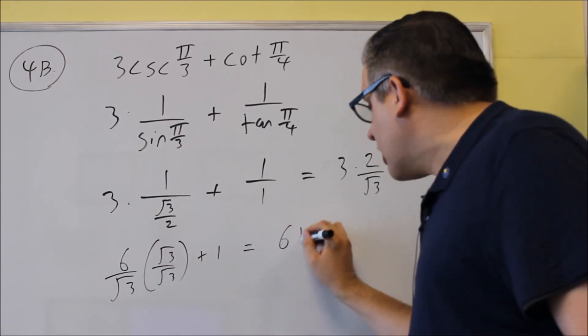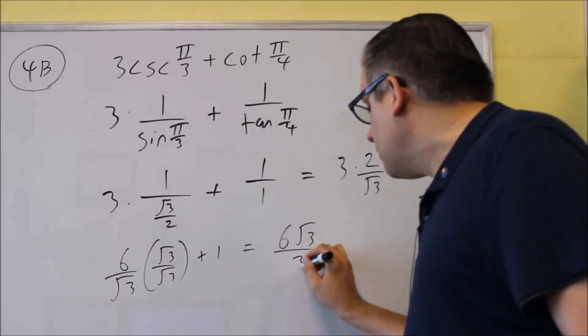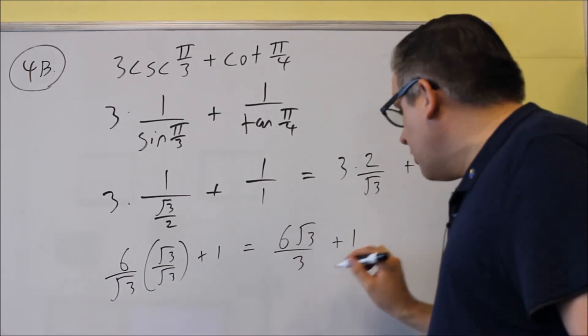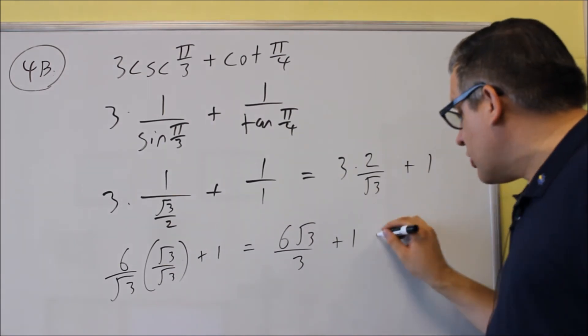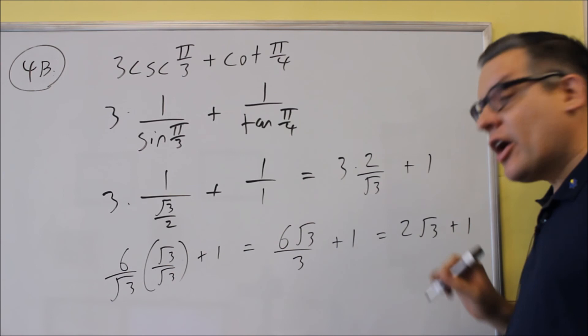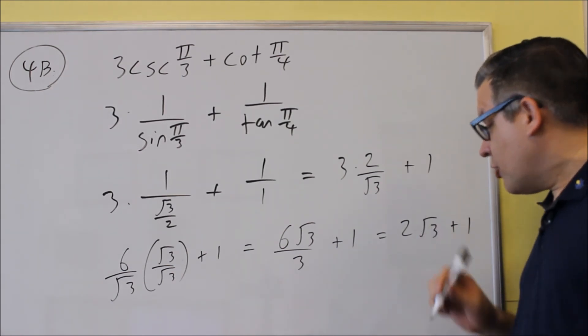Multiply across the top, 6 square root of 3. Across the bottom, you'll get square root of 9, which is 3, plus 1. And then the 6 over 3 reduces to 2 square root of 3, plus 1. So that would be your exact value, 2 square root of 3, plus 1.